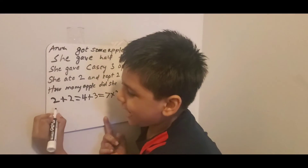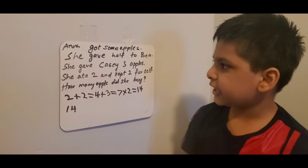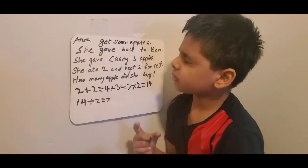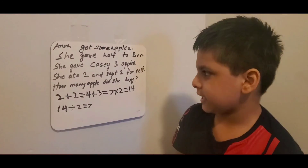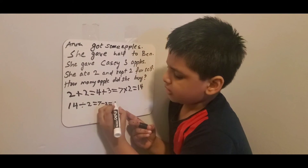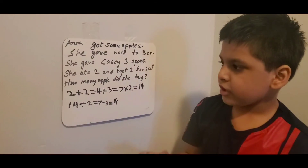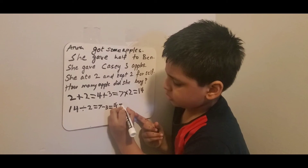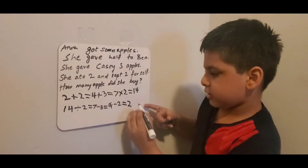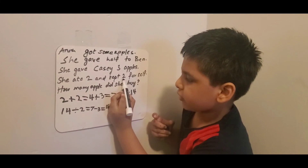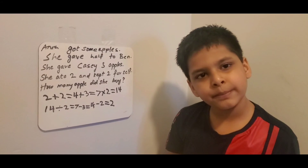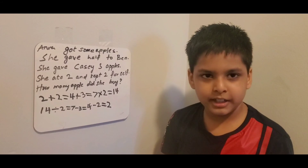Now we will verify the answer. She has 14 apples. She gave half to Ben, that means divide by two — now we get seven. She gave KC 3 apples, that means minus three — now we get four. And she ate two — now we get two, and that two is how much she kept for herself. This is the way to verify our answer. The answer is 14. Thank you everybody, I'll see you in the next video.